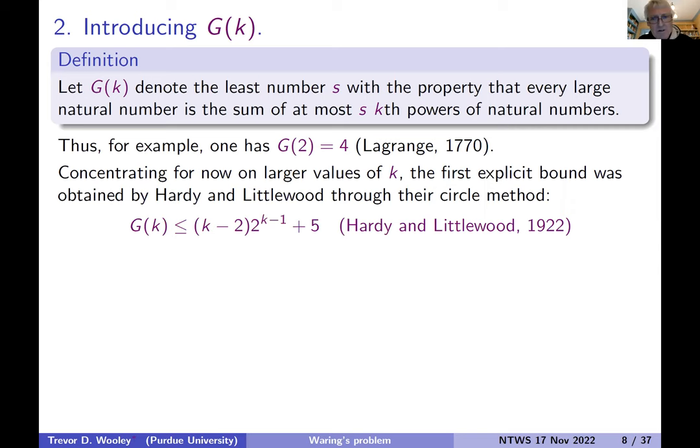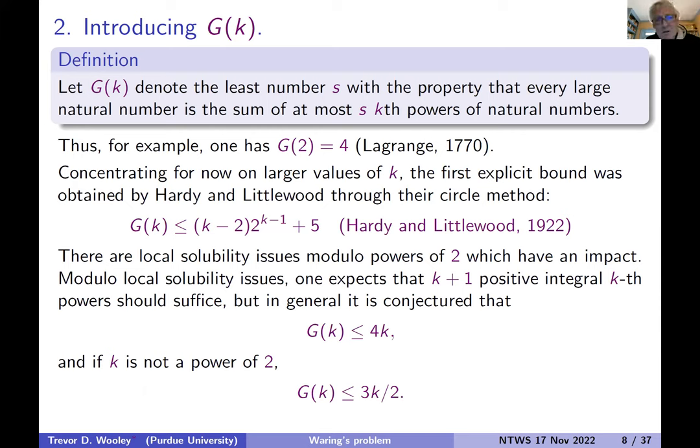Subsequently, there was a lot of development in the subject. The local solubility issues which one has to take account of are similar to obstructions to using three squares to represent all large integers. So big G of k might be as big as four k, even conjecturally, when k is a power of two. If k is not a power of two, big G of k would be at most three halves of k.